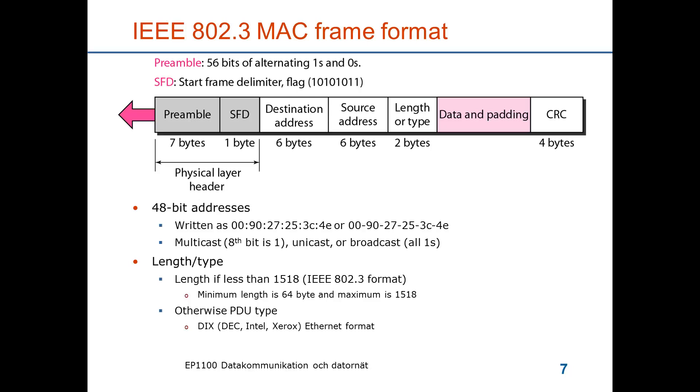The length type field has two functions for legacy reasons. If the value is less than 1518 bytes then it's an 802.3 format. The minimum length of a frame including the 18-byte headers is 64 bytes and the maximum is 1518 bytes. If this field has a value above 1518 it indicates that the field designates a PDU type. This relates to other forms of networks that were included in the standard but which now have become obsolete. The frame is ended by a powerful 32-bit cyclic redundancy check for error detection.